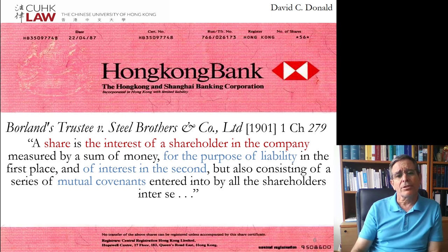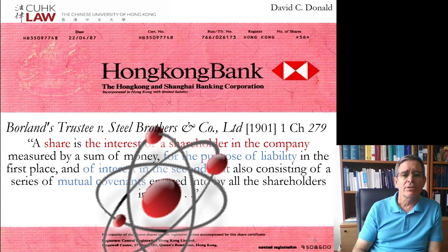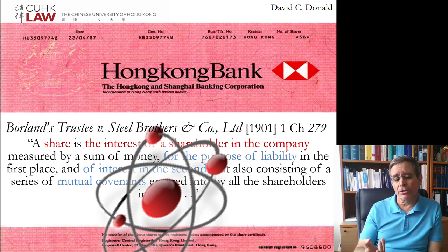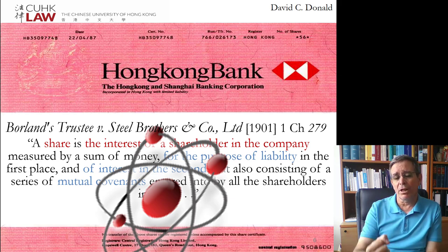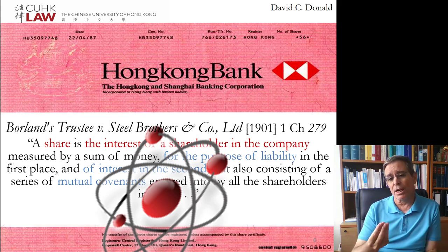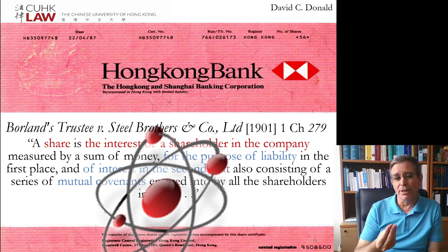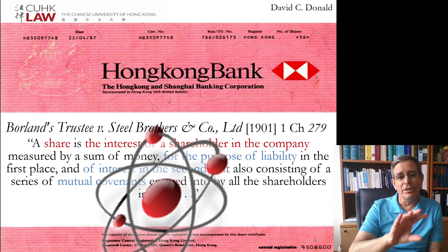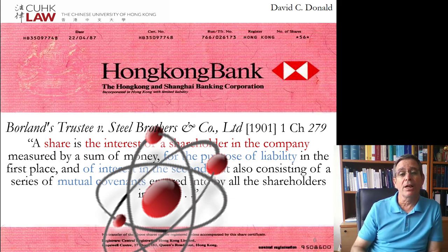The share of stock is in many ways the basic atom of the company's structure. It's a property interest that brings with it a contract interest, and the company rotates on these as the various members come together linked to the company by them. This share of stock is a negotiable instrument, so it's designed to be transferred, and every time it's transferred, it brings with it all of these various legal aspects in property and in contract.